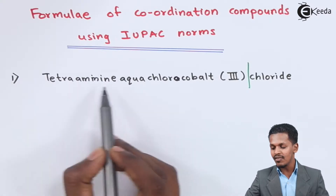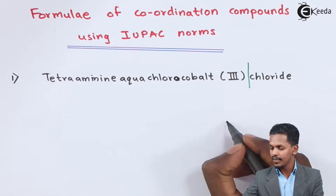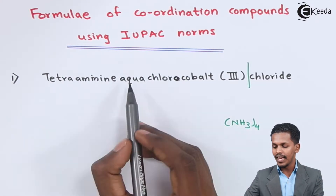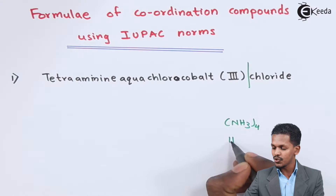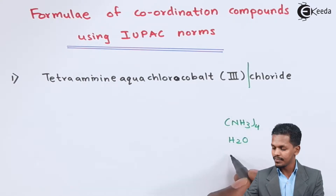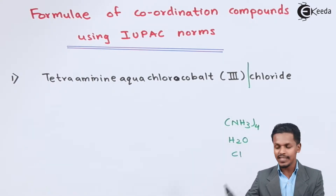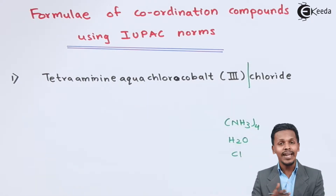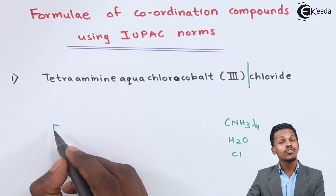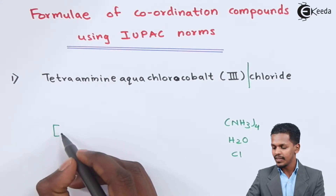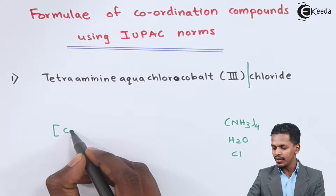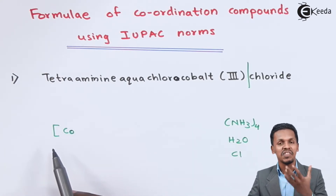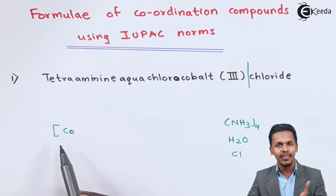We have tetraamine, written as NH₃ four times; aqua, written as H₂O; chloro, which is one Cl atom; and cobalt as the central metal atom. So we write the chemical formula starting with a square bracket. The cobalt will be written first because we always represent the central metal atom first when giving the formula.